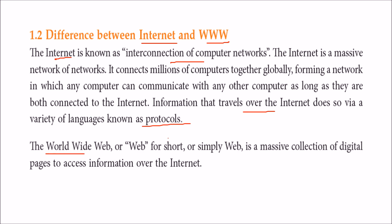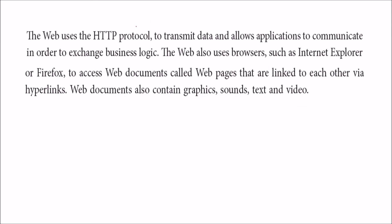This WWW, or web, is simply a massive collection of digital pages — HTML pages — used to access information over the internet. The web uses HTTP, hypertext transfer protocol, in order to transmit, send, and receive data and exchange business logic. The web is accessed through browsers like Internet Explorer, Firefox, and Google Chrome to access documents. Web documents are generally written in HTML and are all linked together through hyperlinks. These pages contain graphics, sound, text, and videos.